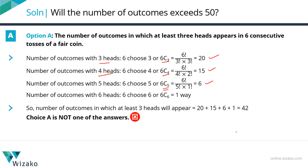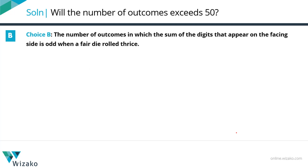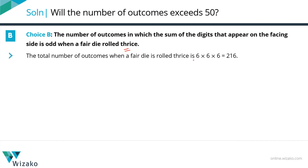Option A is done. Some options may be less time-consuming, but we need to evaluate all 6 the same way — it's essentially 6 questions packaged as 1. Is it likely to be this difficult in the real GRE? Not likely, but we're using this to get a handle on how to answer such questions. Let's move on to option B: the number of outcomes in which the sum of the digits on the facing side is odd when a fair die is rolled thrice. Rolling a die three times gives 6×6×6 = 216 total outcomes.